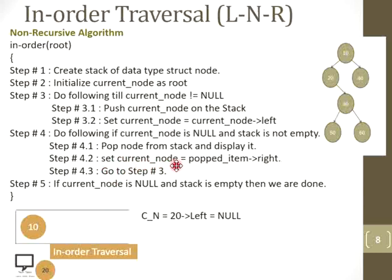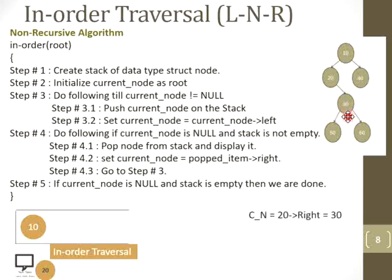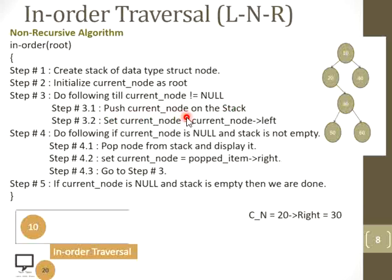Now update the current node with the right child of the popped item 20, which is 30. So the new current node is 30. Go back to the while loop — current node is not null, it is 30, so this condition is false. We go back to step number 3. Current node is not equal to null, so push 30 onto the stack, then update current node with the left child of 30, which is 50. Current node is not null, so push 50 onto the stack. Then reset the current node to the left child of 50, which is null.